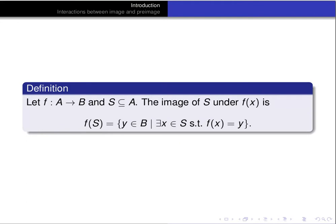First, let's recall the definition of image and pre-image. If f is a function from A to B, and S is a subset of A, then we can define the image of S under f. The image of S under f is denoted f(S), and it's defined to be all of the y in B such that for some x in S, f(x) is equal to y.